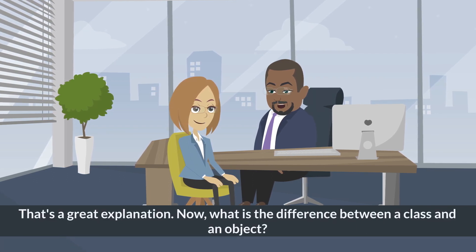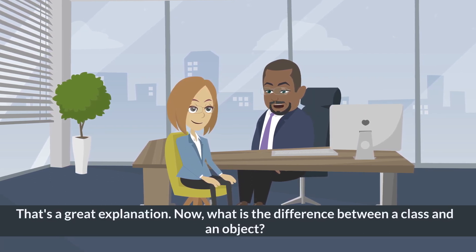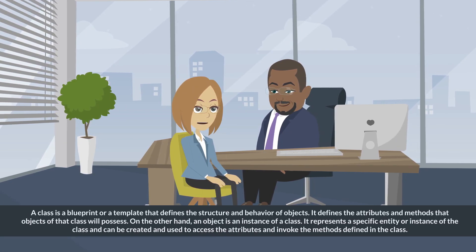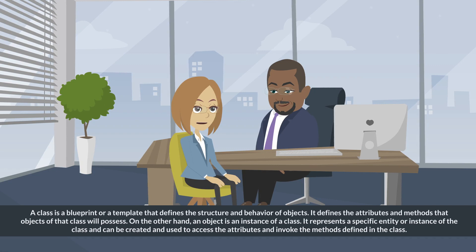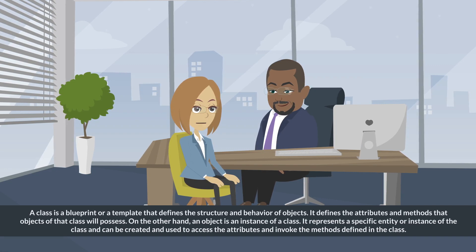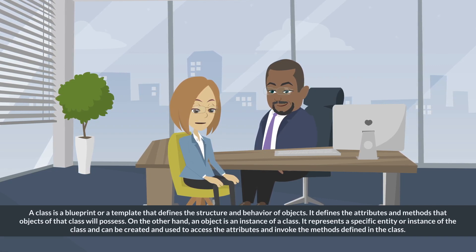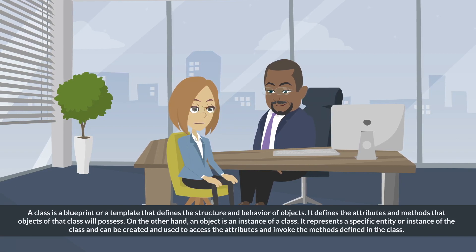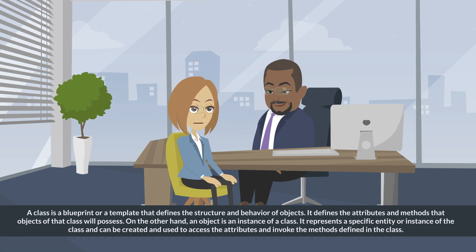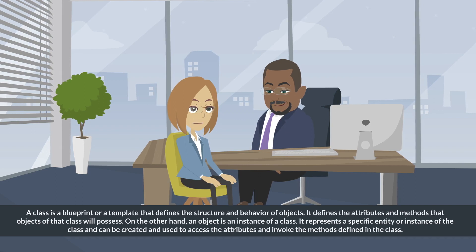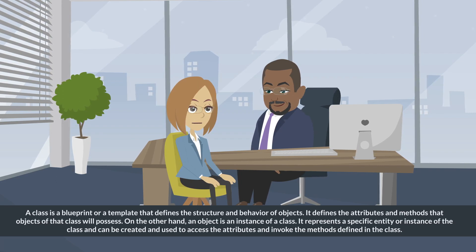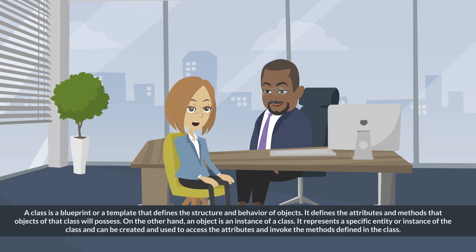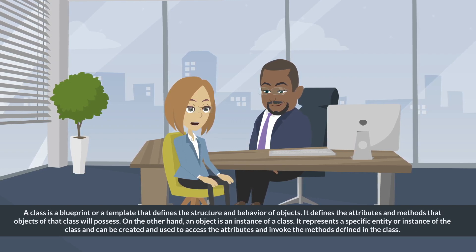That's a great explanation. Now, what is the difference between a class and an object? A class is a blueprint or a template that defines the structure and behavior of objects. It defines the attributes and methods that objects of that class will possess. On the other hand, an object is an instance of a class. It represents a specific entity or instance of the class and can be created and used to access the attributes and invoke the methods defined in the class.